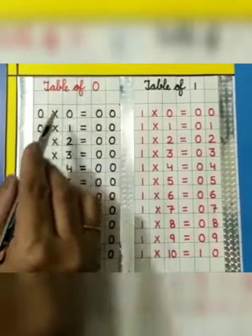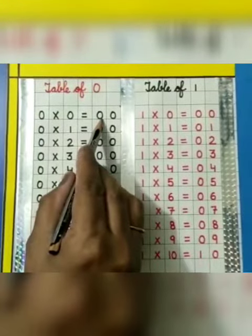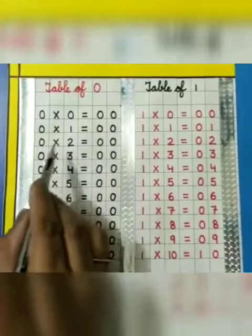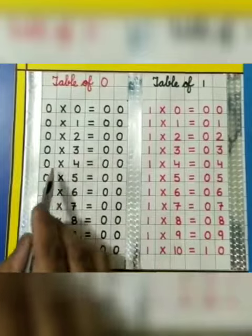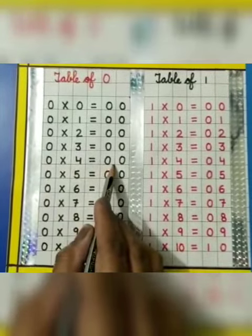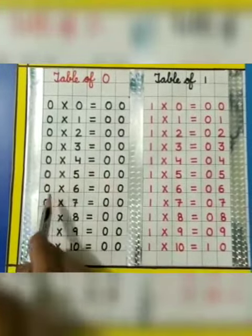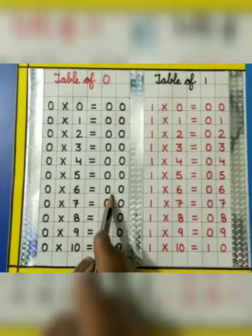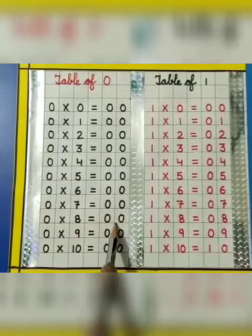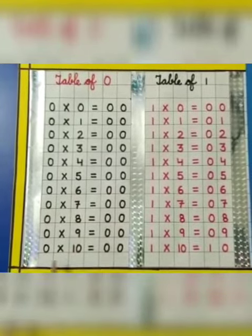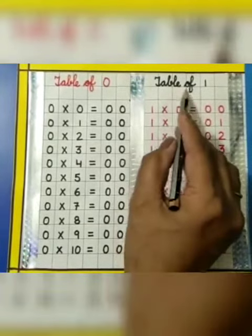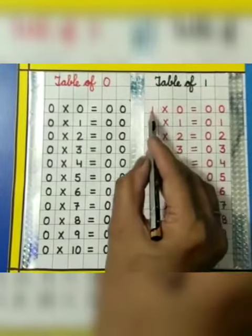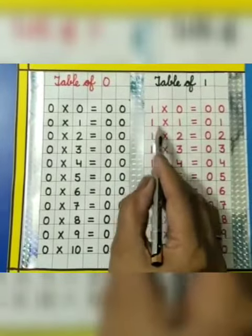Table of 0: 0 0s are 0, 0 1s are 0, 0 2s are 0, 0 3s are 0, 0 4s are 0, 0 5s are 0, 0 6s are 0, 0 7s are 0, 0 8s are 0, 0 9s are 0, 0 10s are 0. Now table of 1.